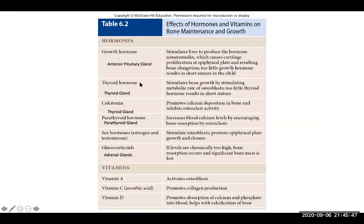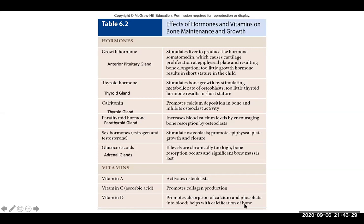Here is a look at bone hormones and their effects on bone maintenance and growth. Growth hormone is important, as is thyroid hormone. Calcitonin lowers blood calcium levels and inhibits osteoclast activity. Parathyroid hormone increases blood calcium levels by encouraging bone resorption. Sex hormones are important in bone growth, especially during puberty. Glucocorticoids also play a role. Key vitamins include Vitamin A, which activates osteoblasts; Vitamin C; and Vitamin D, which promotes absorption of calcium and phosphate into the blood — which bones need to become calcified.